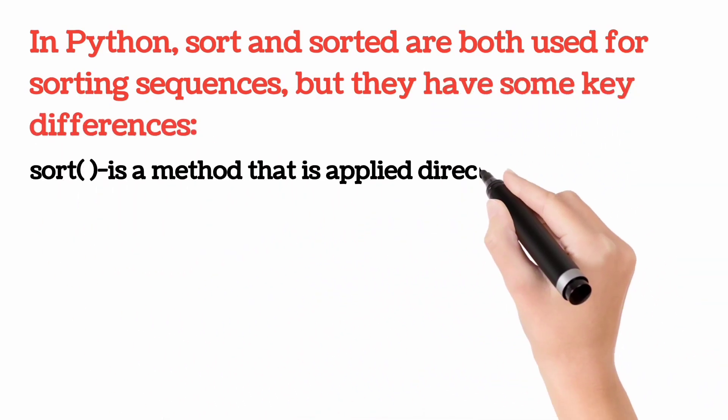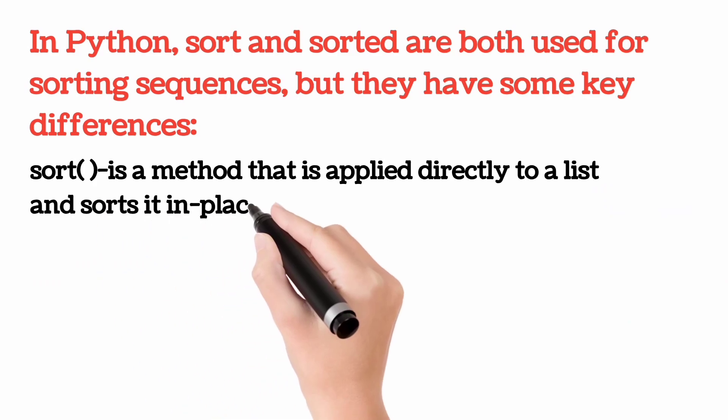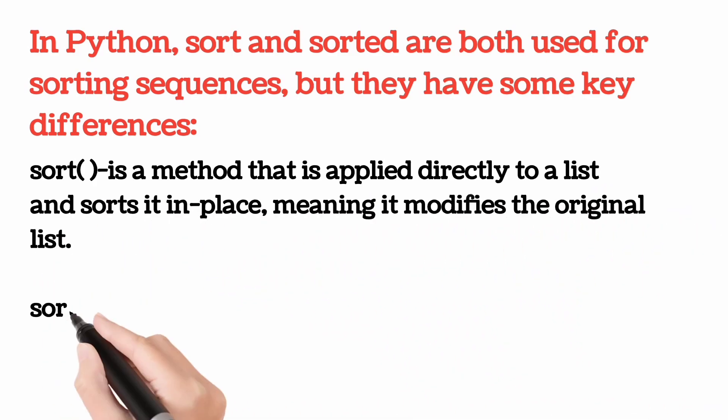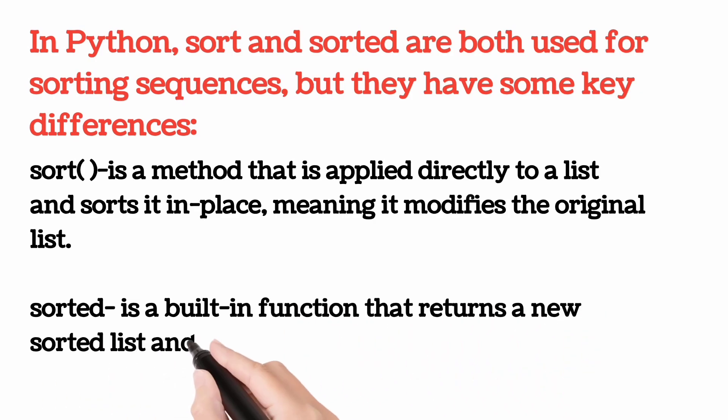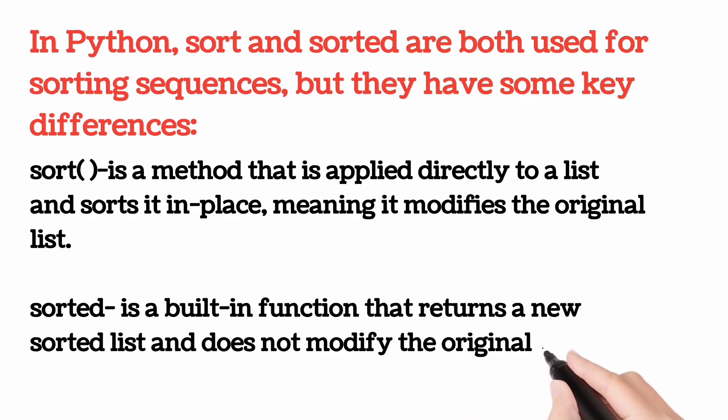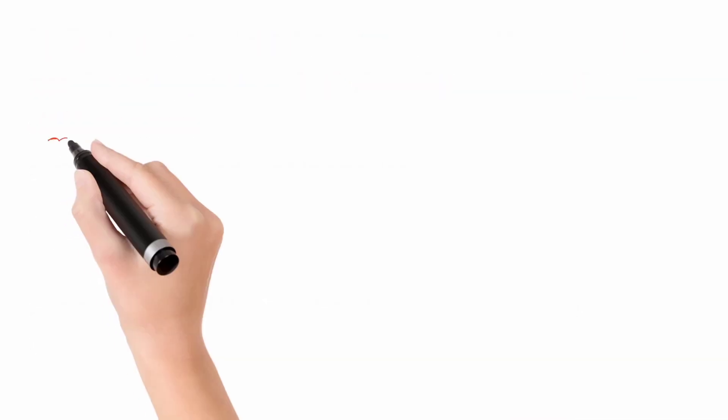Sort is a method that is applied directly to a list and sorts it in place, meaning it modifies the original list. Sorted is a built-in function that returns a new sorted list and does not modify the original list.